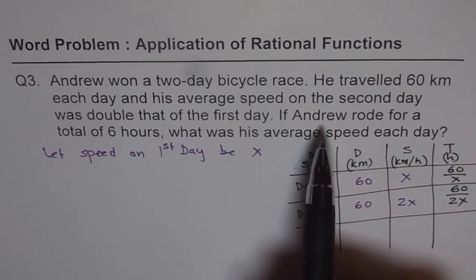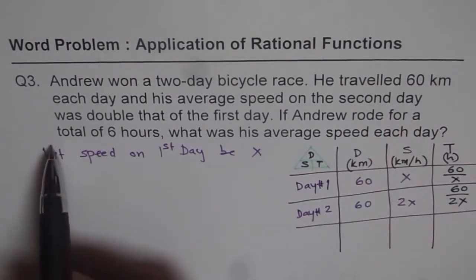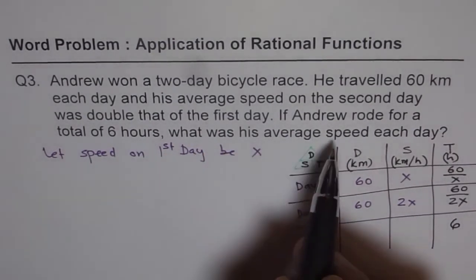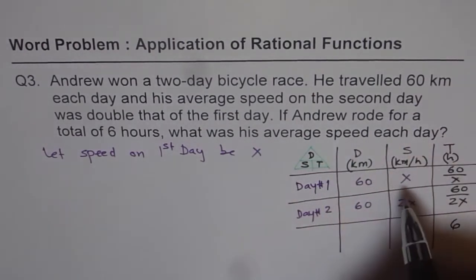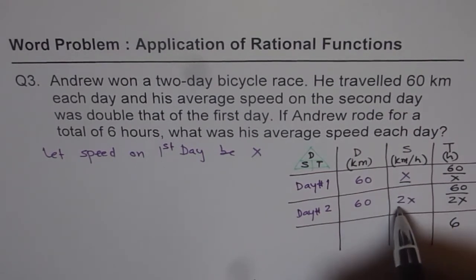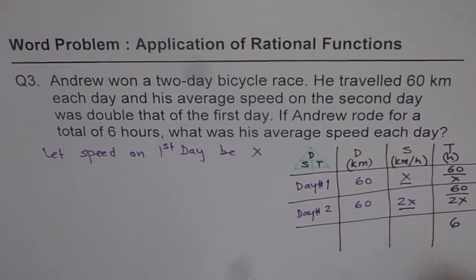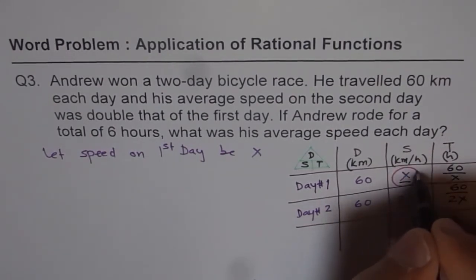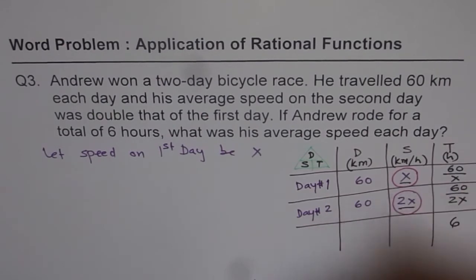It says if Andrew rode for a total of 6 hours, so total of these 2 times is 6 hours. What was his average speed each day? So we have to find average speed each day. We have to find x and 2x. So in our answer, we have to write both the answers. Circle them - what has to be answered? These are our answers.